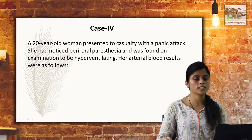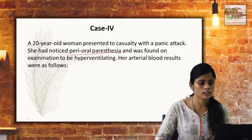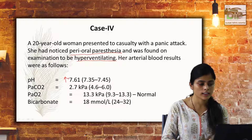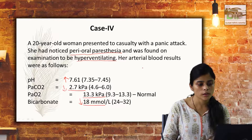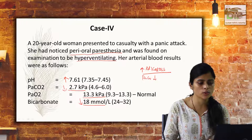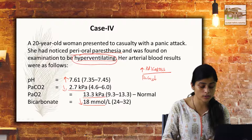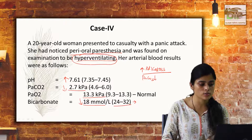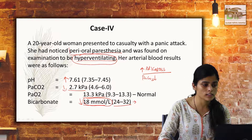The fourth case: a 20-year-old woman presented to casualty with a panic attack and had noticed perioral paresthesia, and was found on examination to be hyperventilating. Her arterial blood gas showed that pH was high, PCO2 was very low due to hyperventilation, PO2 was within the normal range, and bicarbonate level was also reduced. pH is increased indicating alkalosis, and PCO2 is in the decreasing trend because of the hyperventilation. The body has compensated by increased bicarbonate excretion — reabsorption is reduced — so bicarbonate is in the decreasing trend. This may be a case of respiratory alkalosis.